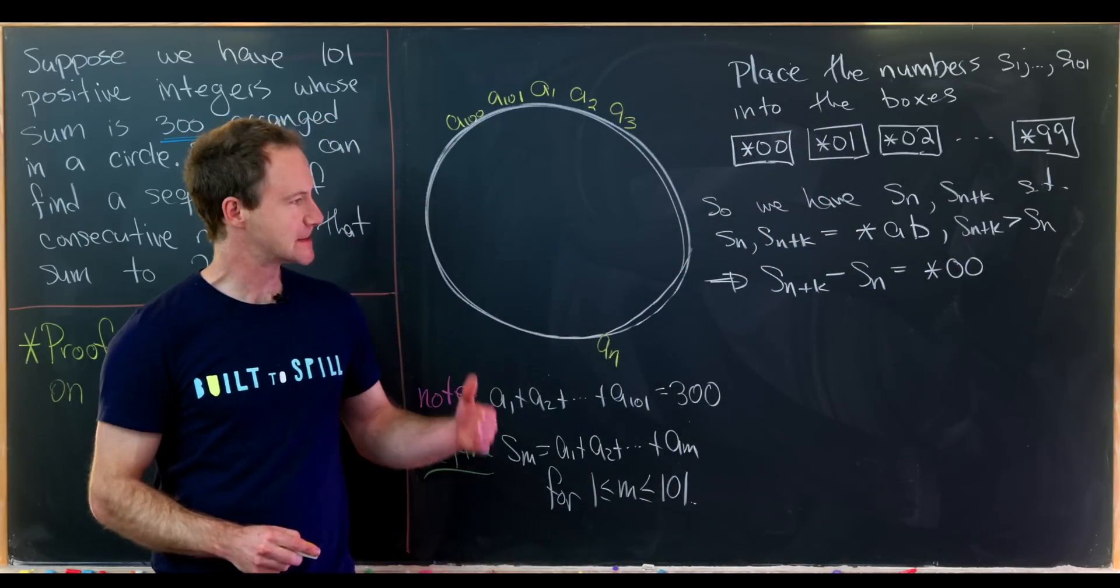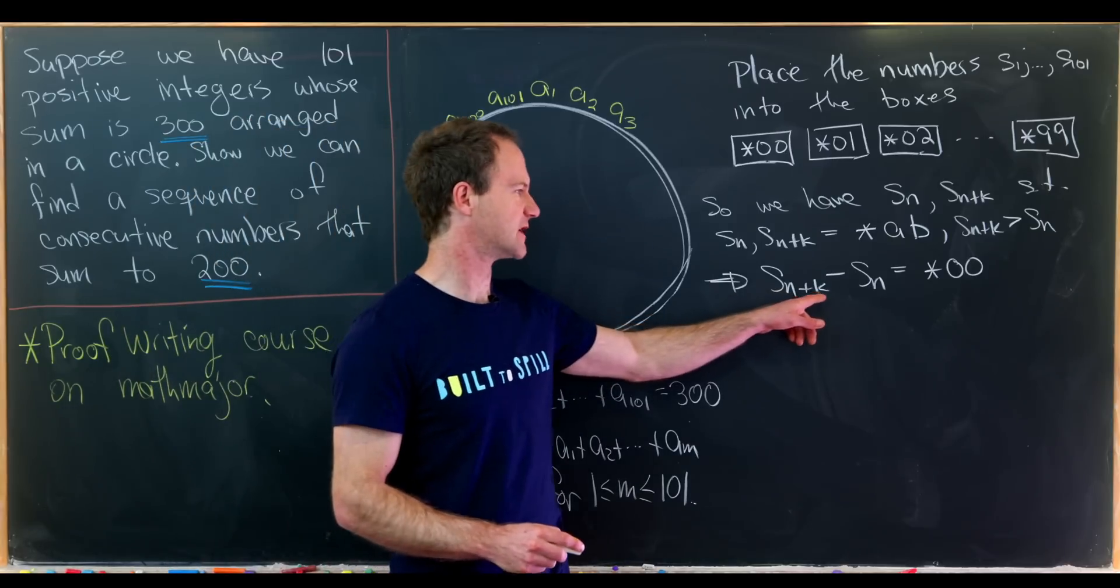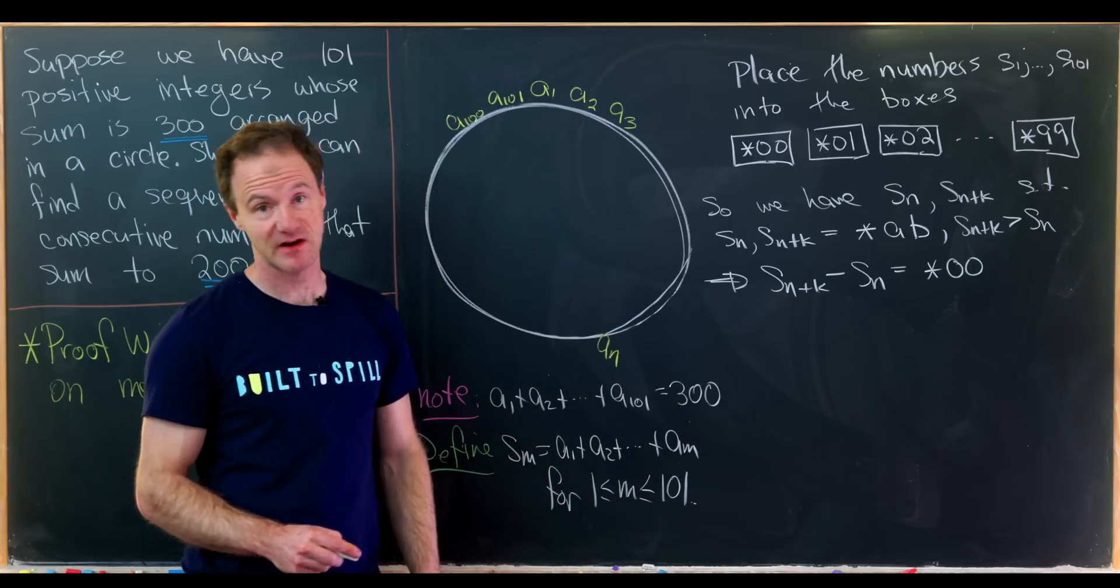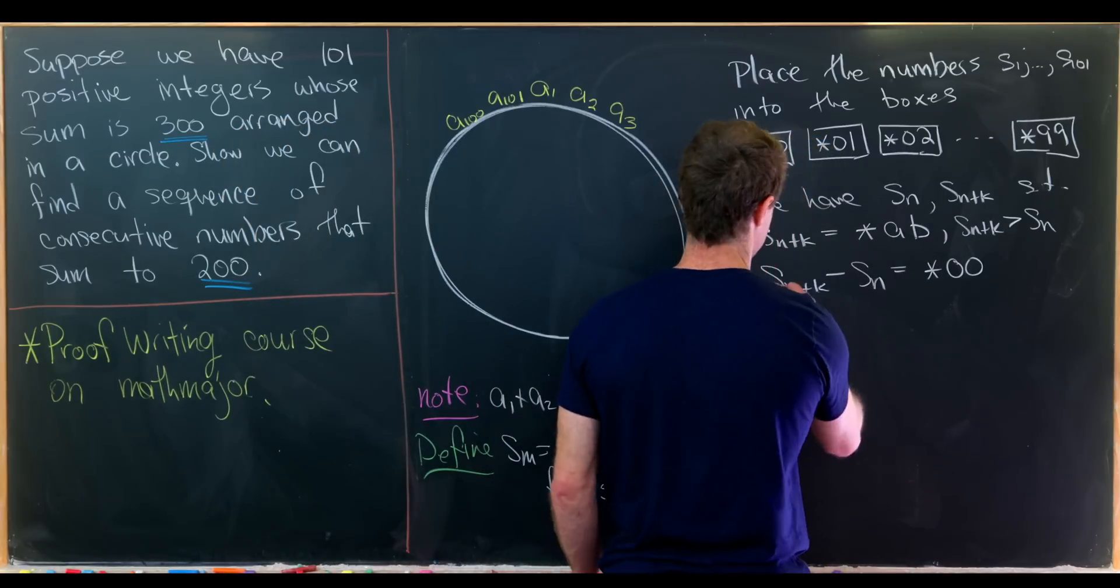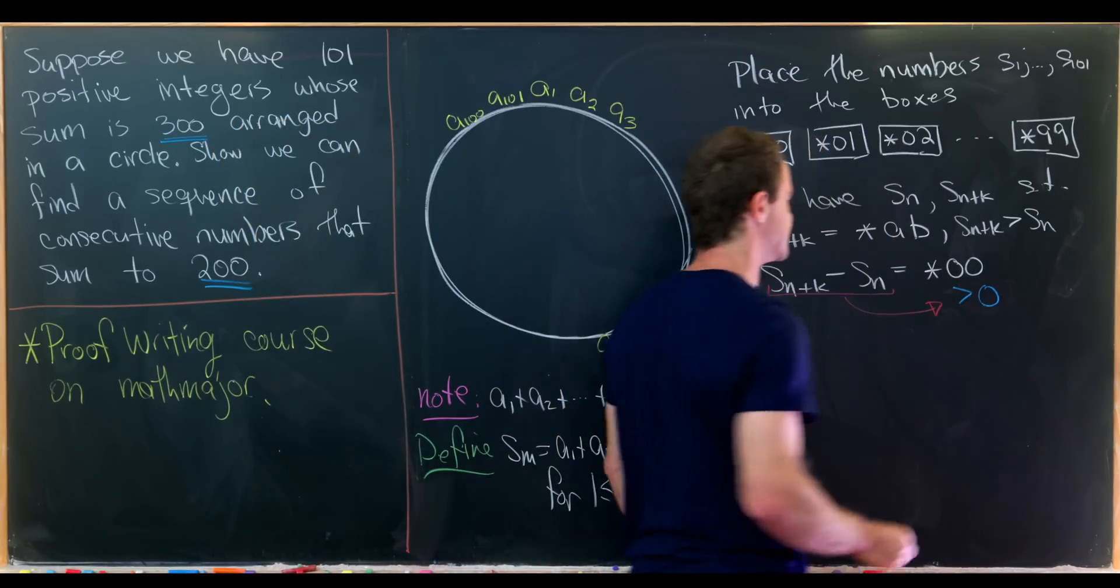Okay, but let's notice that s sub n plus k minus s sub n is definitely bigger than 0. So let's collect this information. So this thing is bigger than 0.